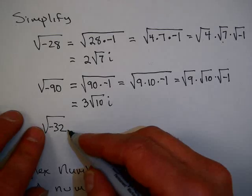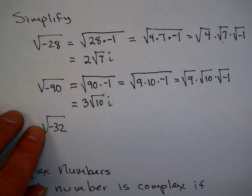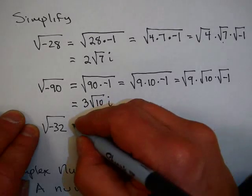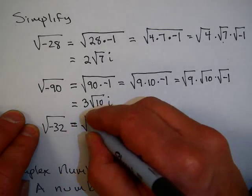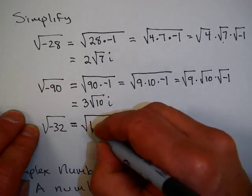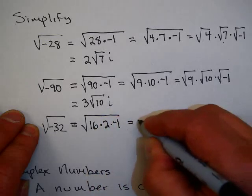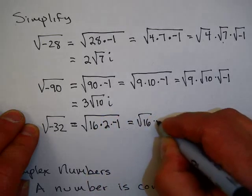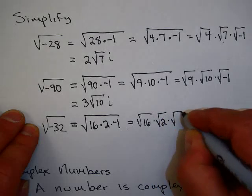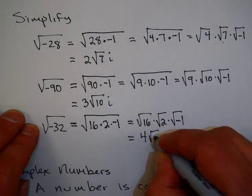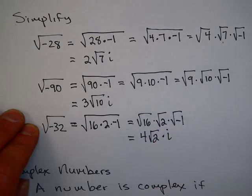One last example. Let's look at the square root of negative 32. You might want to pause the video and then come back when you have completed. Square root of negative 32 is 16 times 2 times negative 1. Square root of 16 times square root of 2 times square root of negative 1. That's 4 times the square root of 2 times i, or 4√2 i.